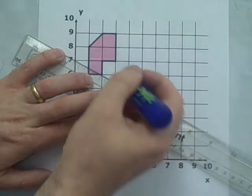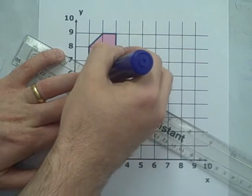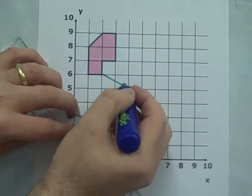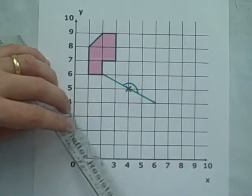The point at 2,6 is two squares left and one square up from the center of rotation, so we plot a new point two squares right and one square down. Here is the 180 degree angle for emphasis.